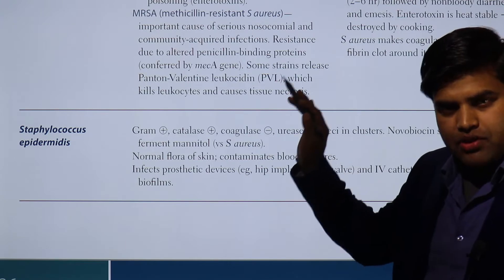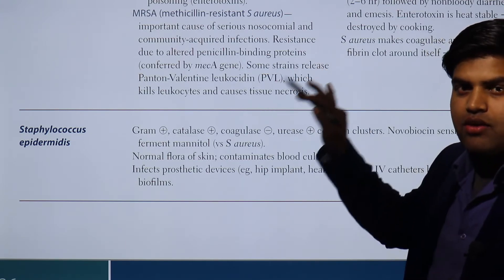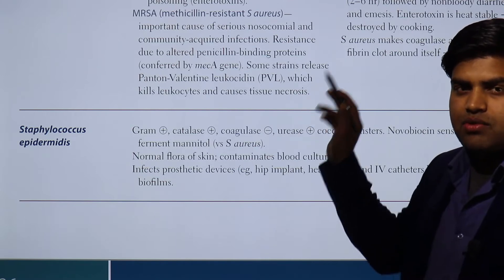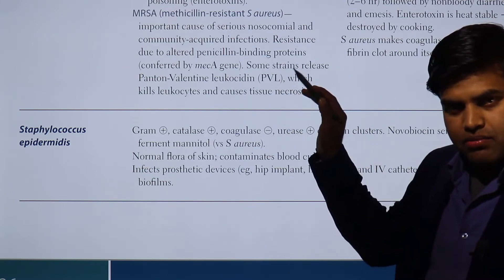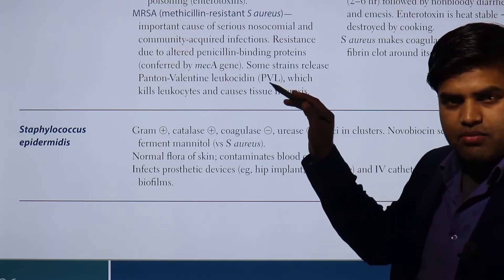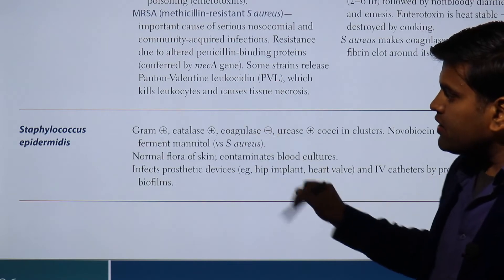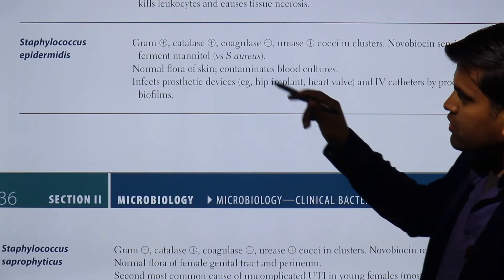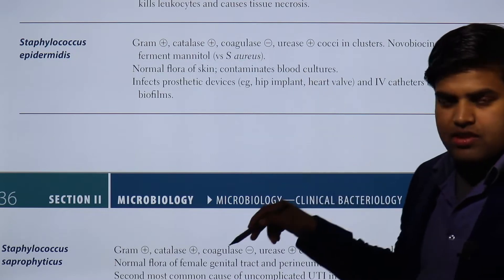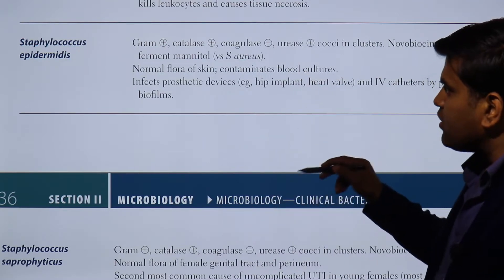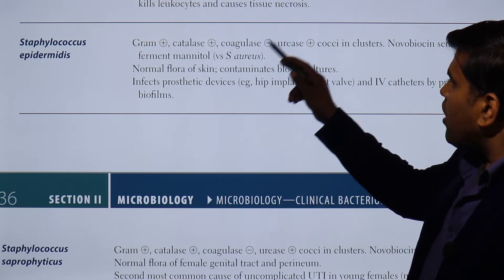Staphylococcus aureus is a gram-positive cocci in a cluster, catalase positive, and coagulase test positive. But those organisms which are gram-positive, catalase positive, and coagulase negative are Staphylococcus epidermidis and Staphylococcus saprophyticus — both are coagulase negative.